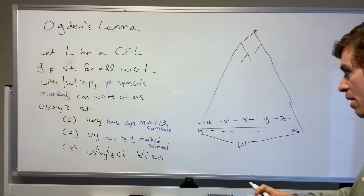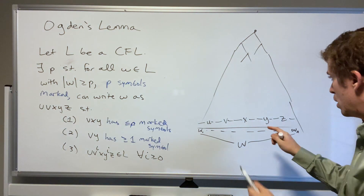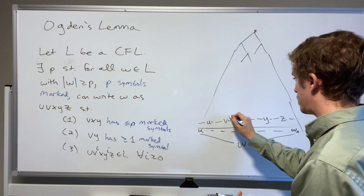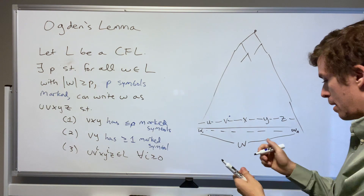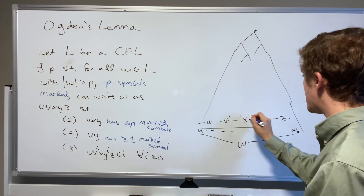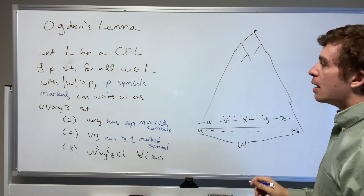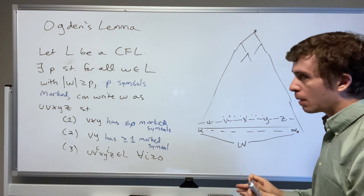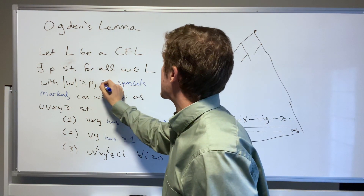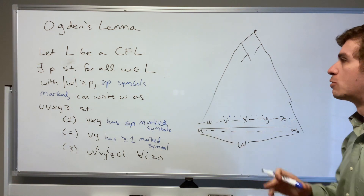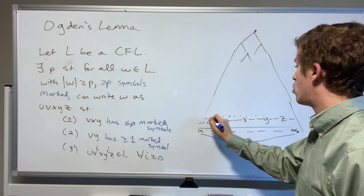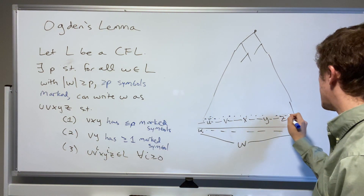The vxy piece must have at least one marked thing — let's put one in v. The vxy piece has at most p marked things, so it can't have too many. We have at least p symbols marked overall, and we might as well assume exactly p symbols are marked for now. So we don't have too many in the vxy part, but we can have a whole bunch in the u part and the z part.